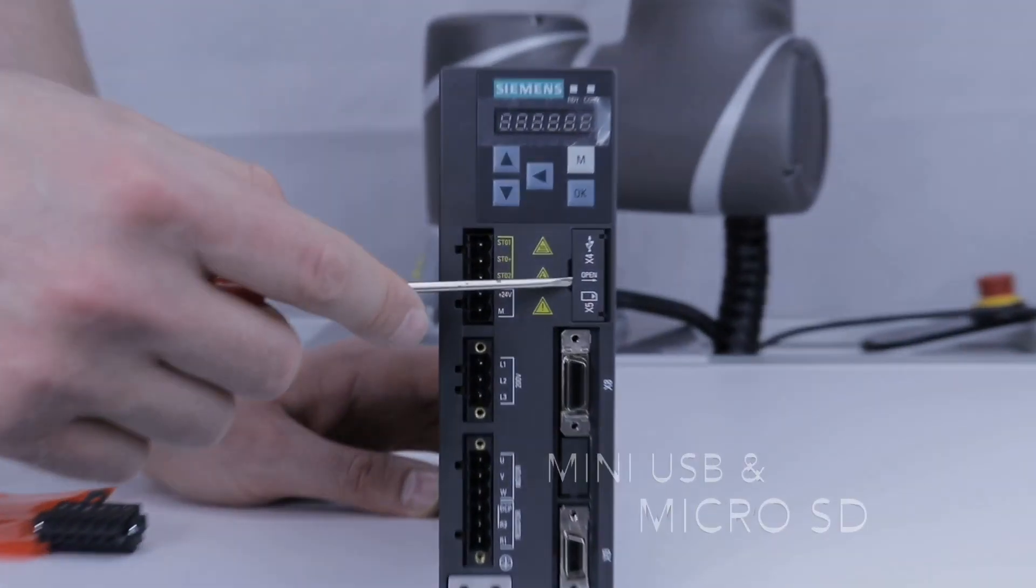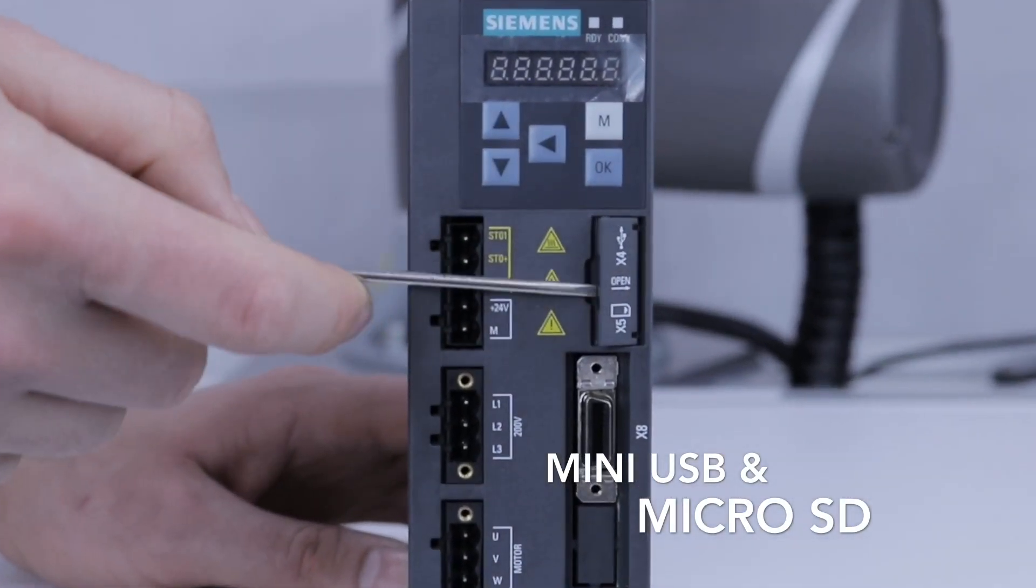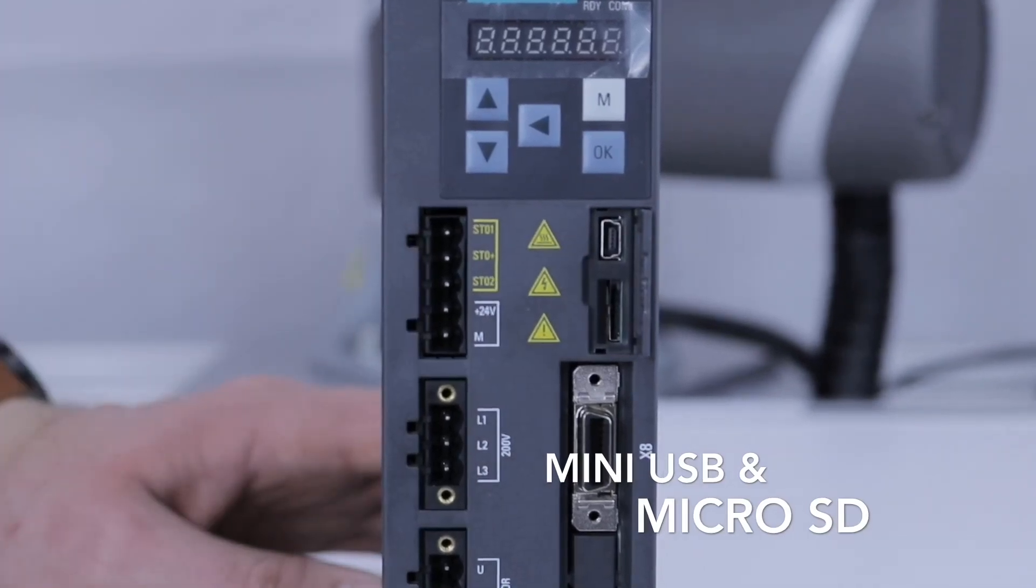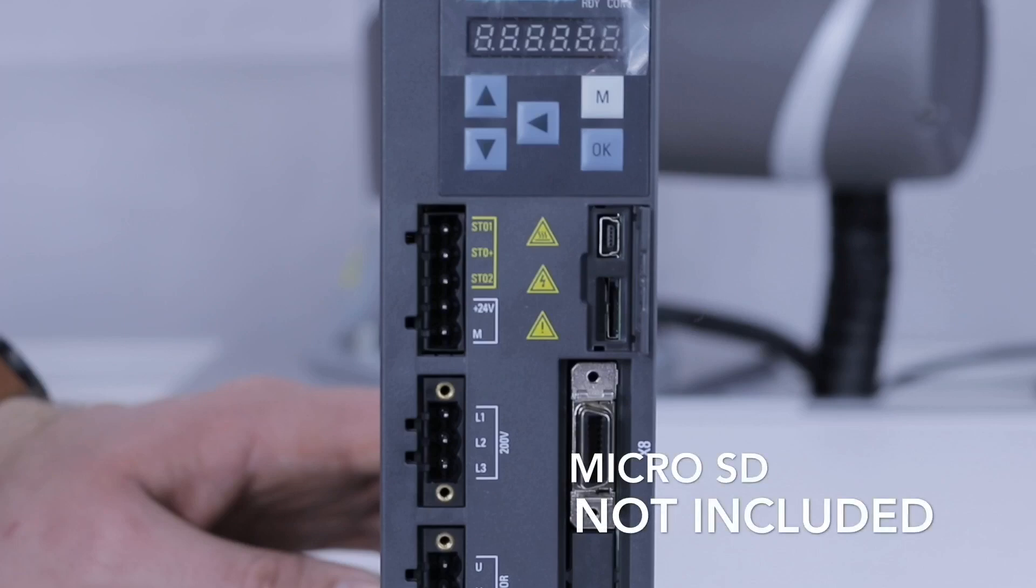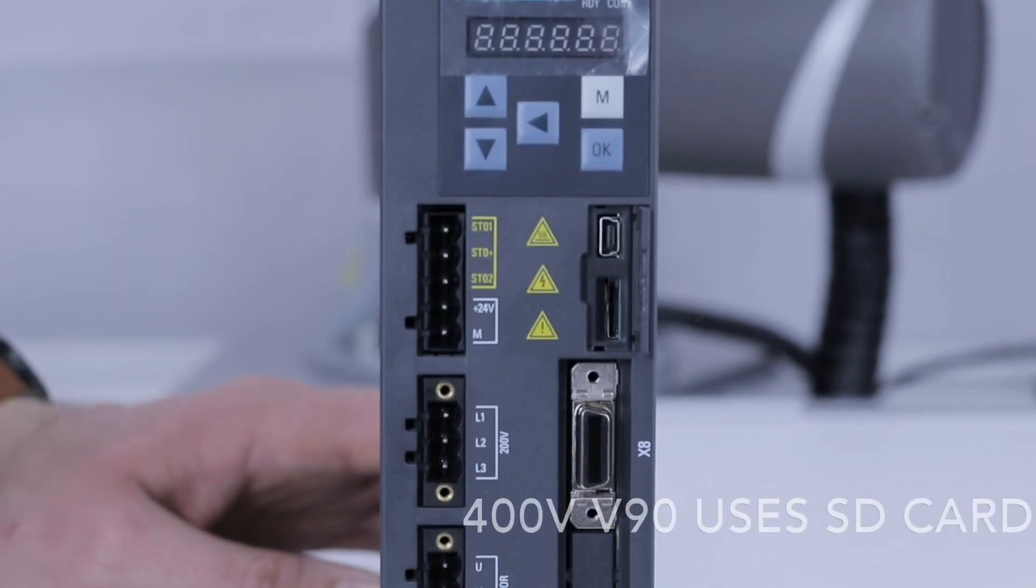This is the port for the miniUSB and microSD cards. The miniUSB interface is used to commission or set up the drive using the free V-assistant PC software. The microSD can be used to backup and load new drive configurations. The memory card is sold separately and is not required. Please note that the 400V V90 variant uses an SD card.